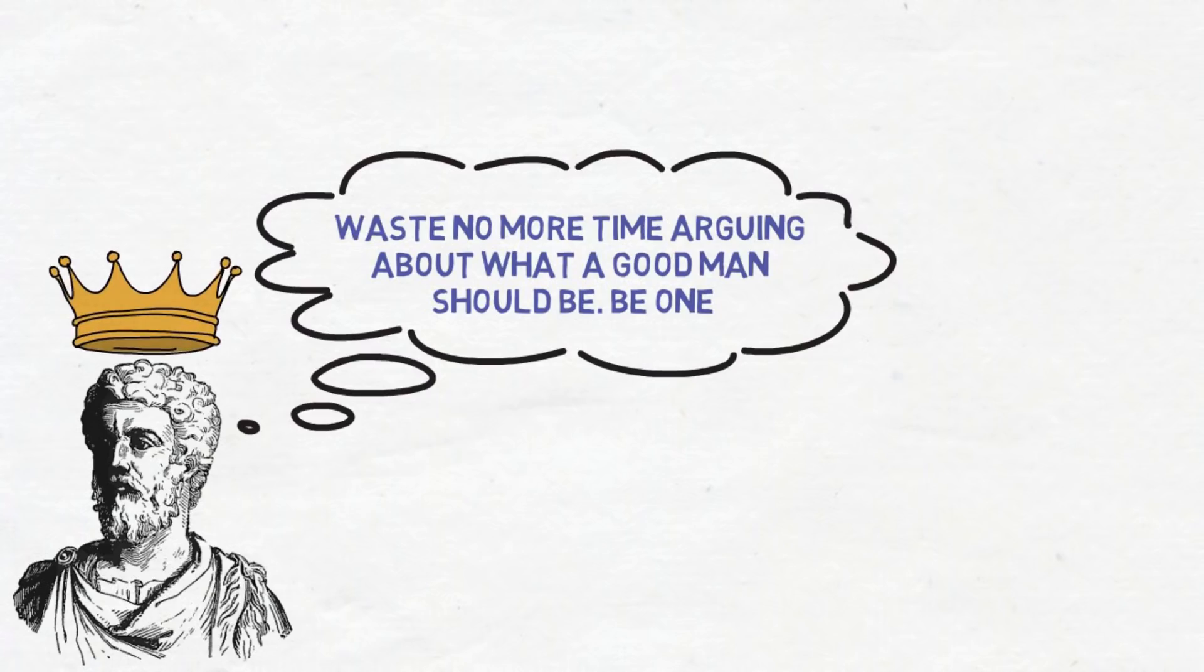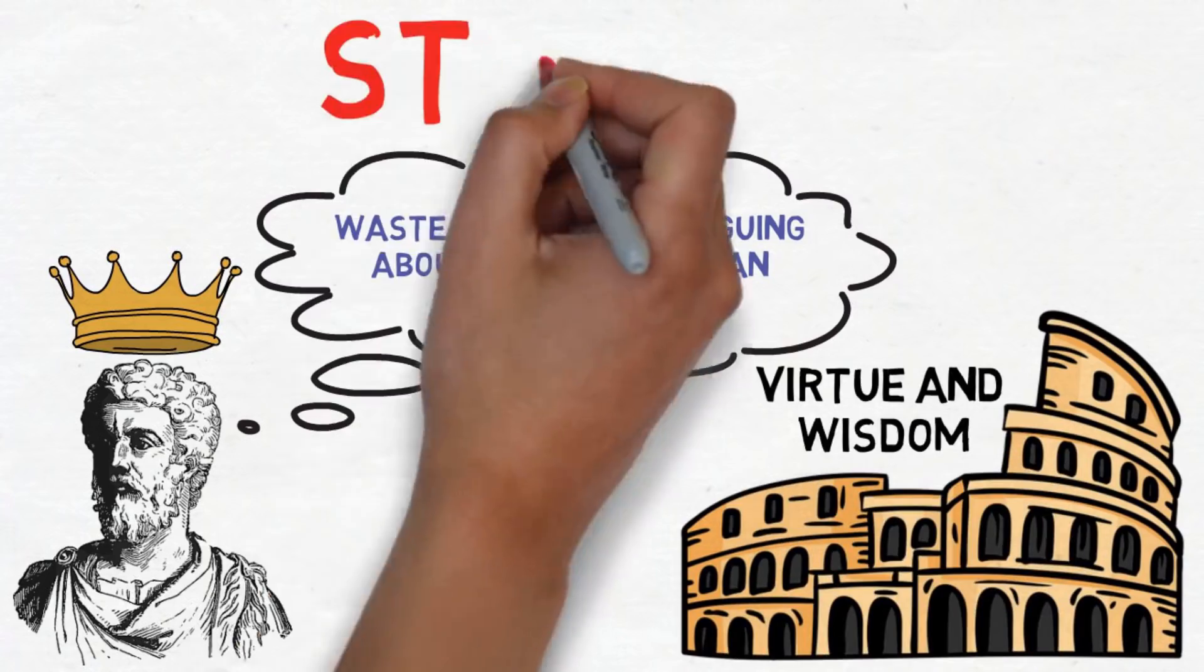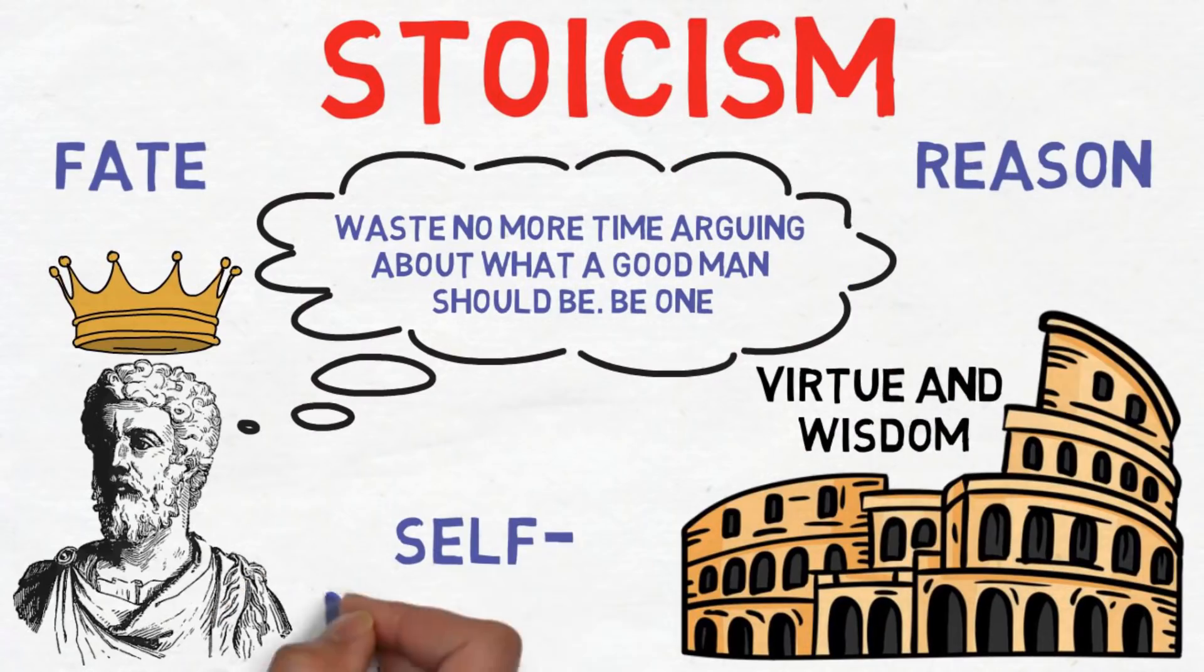Aurelius was the emperor of Rome during the 2nd century AD and is said to be the last in a line of five good emperors. Under his leadership, the empire was guided by virtue and wisdom. He was a student of Stoicism, a philosophy that emphasized fate, reason, and self-restraint.